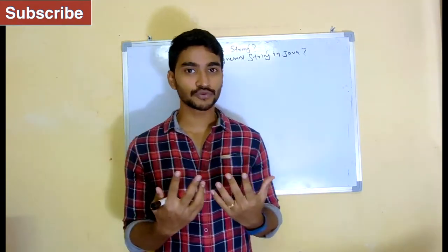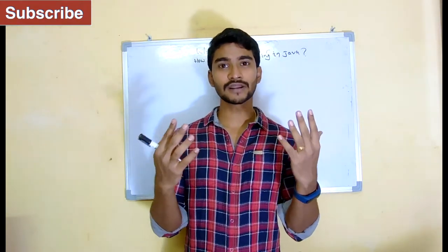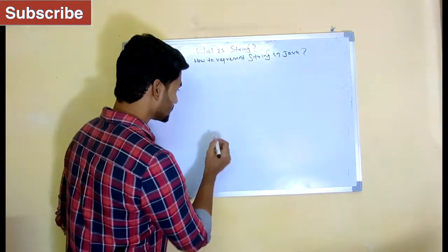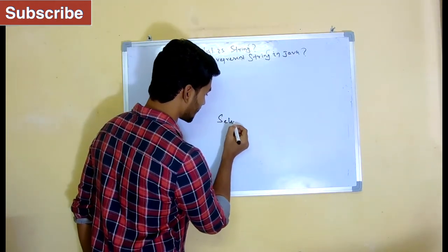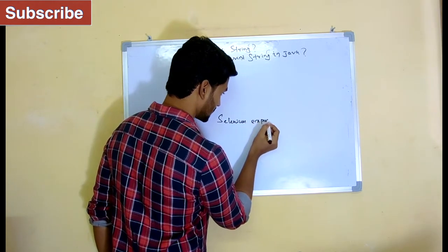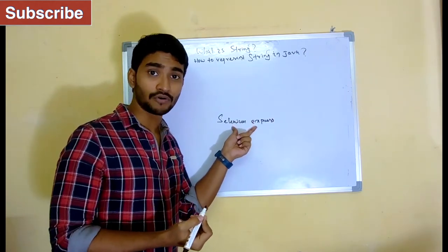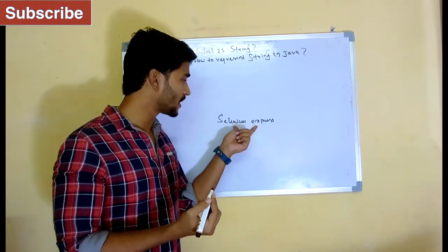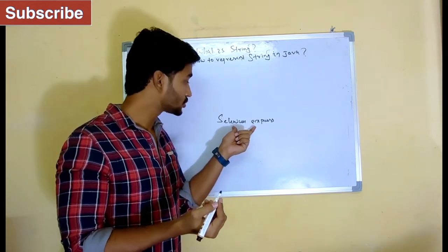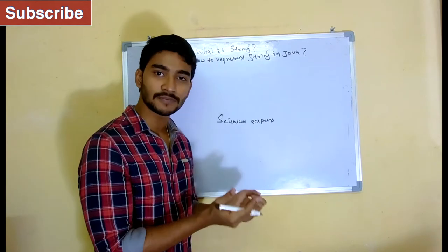Whenever we talk about strings, it's all about names. Whenever I talk about string, just think about names — something like this. Suppose my channel name is Selenium Express, so I'll write Selenium Express. If you see this, this is a string in Java. You must be wondering why we're calling it string — string means a group of characters, a sequence of characters.